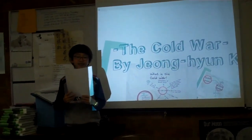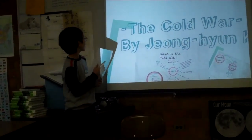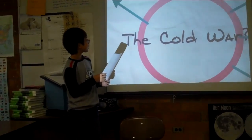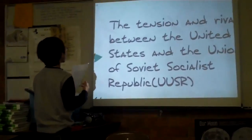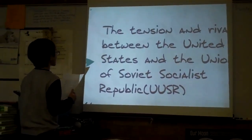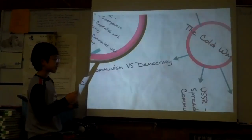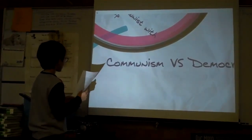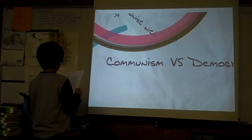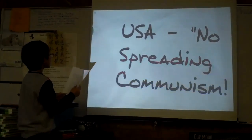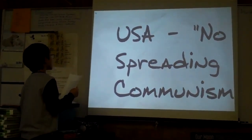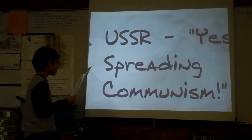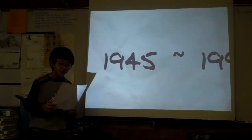My name is John Kim and I am presenting about the Cold War. The Cold War was the tension and rivalry between the United States and the Union of the Socialist Republic, which is the old name of Russia. Both sides got involved in other countries to either stop the spread of communism or have the spread of communism. USA didn't want the spread of communism and USSR wanted the spread of communism. This occurred from 1945 to 1991.